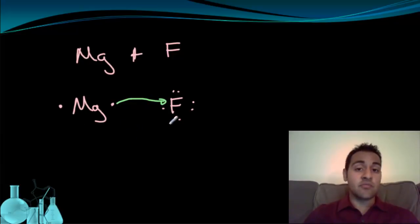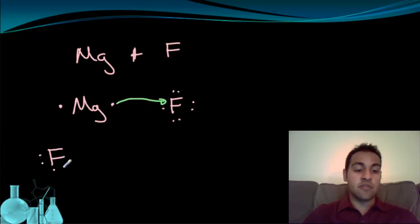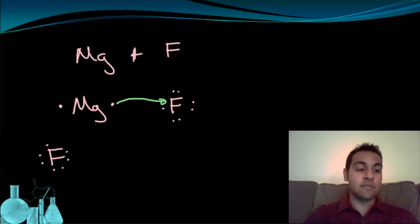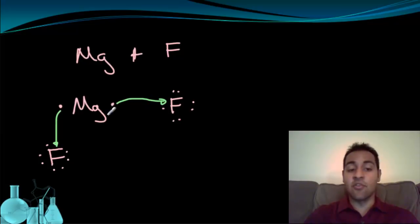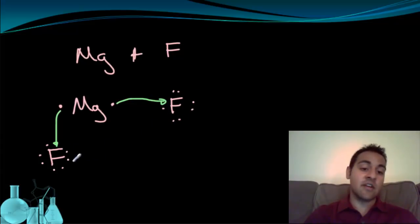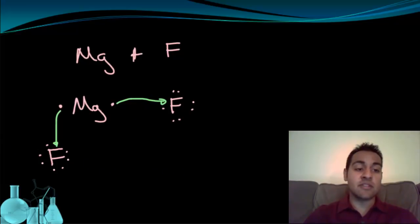So what happens now? We can realize that there's more than one fluorine present. If there's another fluorine nearby with seven electrons, it will take the remaining electron from magnesium. Now magnesium has lost both electrons, so it's at a full valence shell for the next inner layer of electrons. And each one of these fluorines is at eight to satisfy the octet rule. The only question remaining is how do we represent this with a Lewis structure?